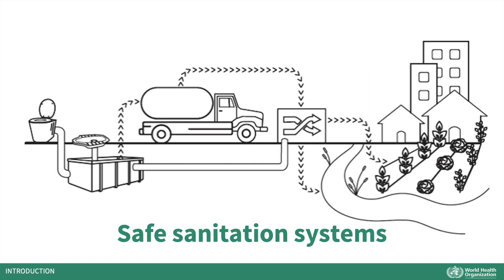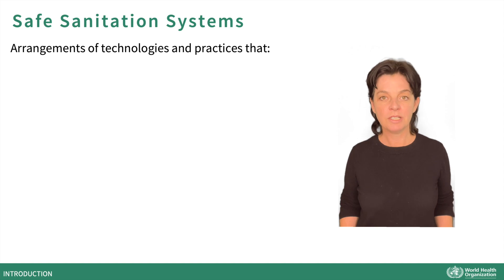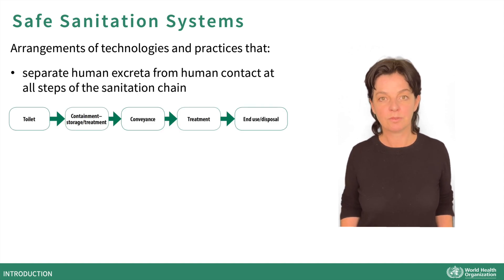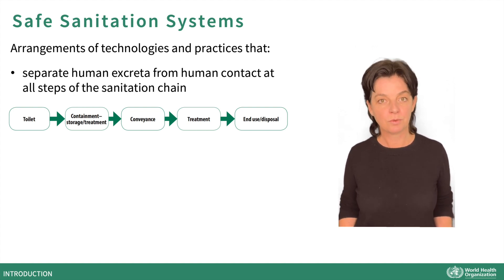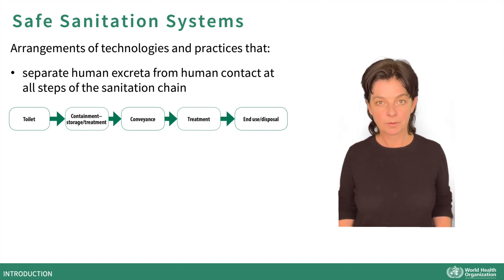Let's start with the definitions of safe sanitation systems. Safe sanitation systems are arrangements of technologies and practices designed and used to separate human excreta from human contact at all steps of the sanitation chain — from toilet, containment, storage and treatment, conveyance, treatment and end use or disposal.